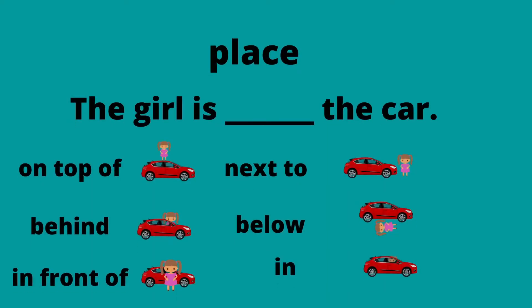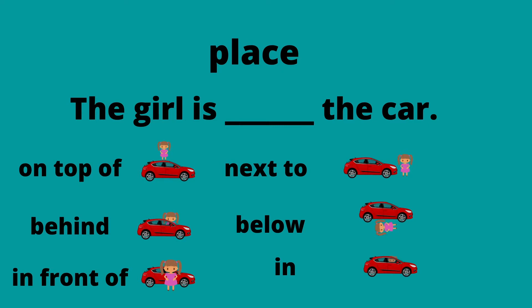There are a lot of prepositions. With the sentence 'the girl is ___ the car': you could say she is 'on top of' the car — standing on it; 'behind' the car — the car is closer to us; 'in front of' — the girl is closer; 'next to' the car — standing on one side. You could also say the girl is 'below' the car, or more likely 'under' the car — but let's skip that example.